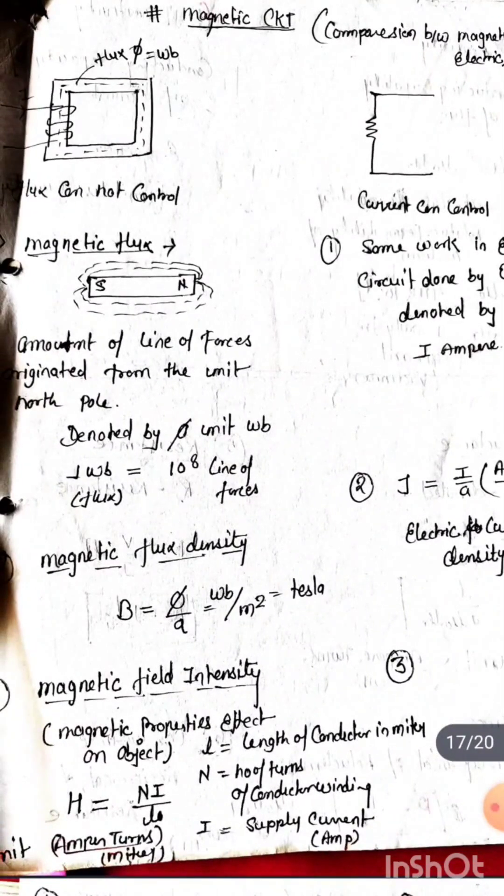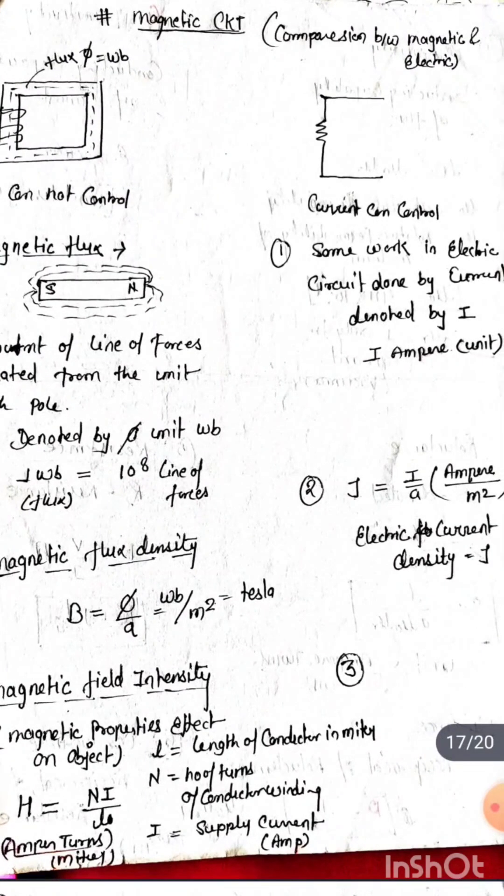The first difference is that we are using flux in magnetic circuit and current in electric circuit. Flux cannot be controlled, but current can be controlled.